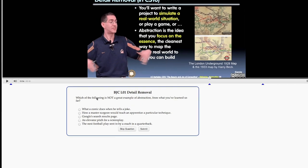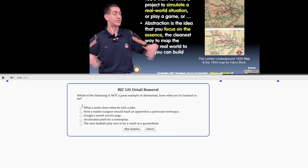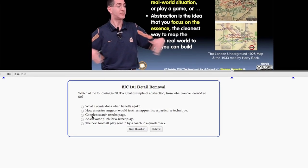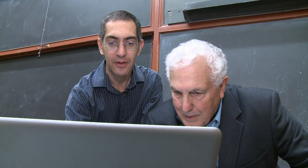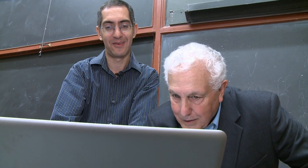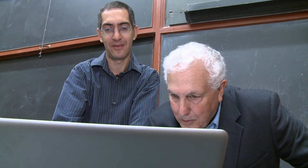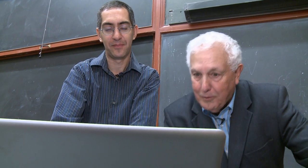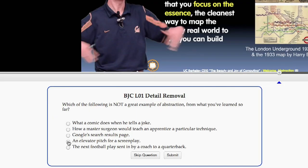And now there's a question which is asking you, which of the following is not a great example of abstraction from what you've learned so far? And you then choose something. What does a comic do? What a comic does when he tells a joke. How a master surgeon would teach an appointee a particular technique, and so forth. And so I might choose something. An elevator pitch for a screenplay.